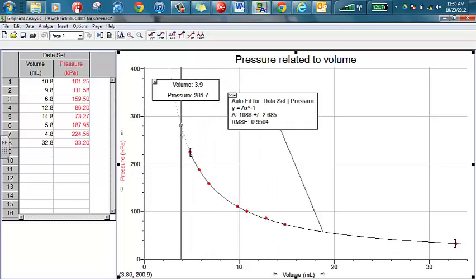So the interpolate is a good thing to do to actually trace the x and y values. In this case, the x values are volume and the y values are pressure for any point on this best fit line.